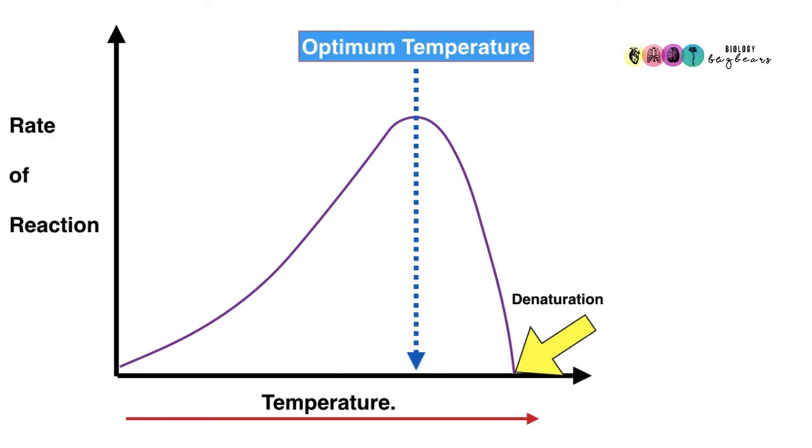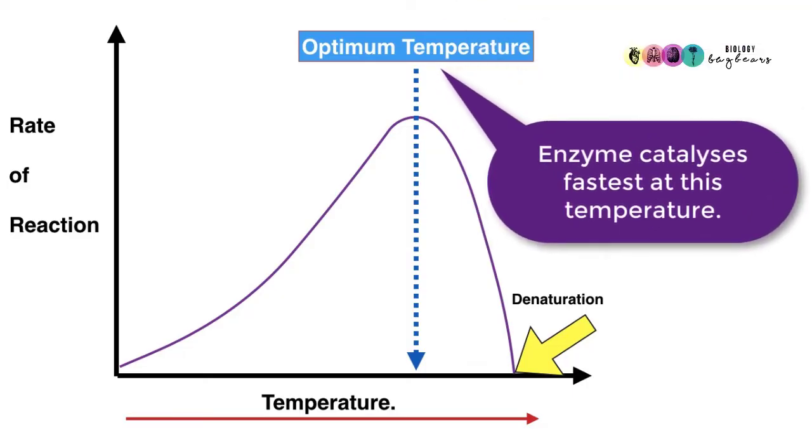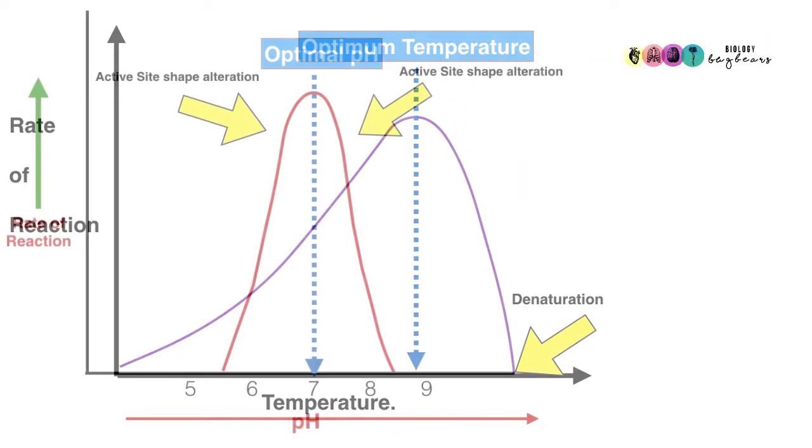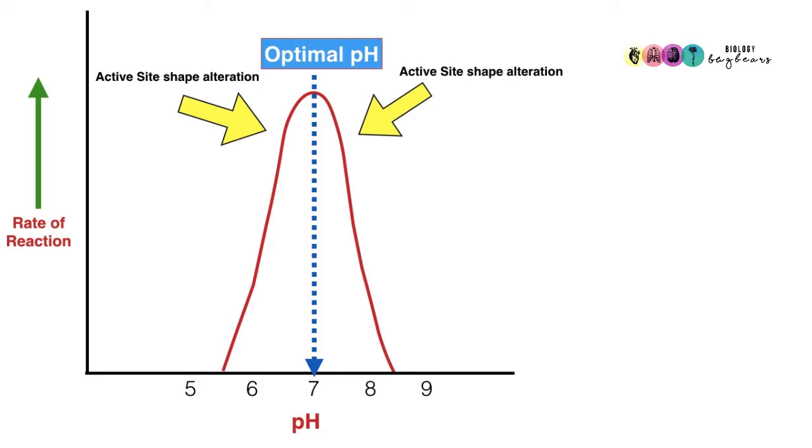It's very important that you can explain what optimum temperature is. It's the temperature at which this enzyme is catalyzing at its fastest rate. When you look at the pH graph, you can see it's completely different to the temperature graph. It is narrower and it's got a higher peak.